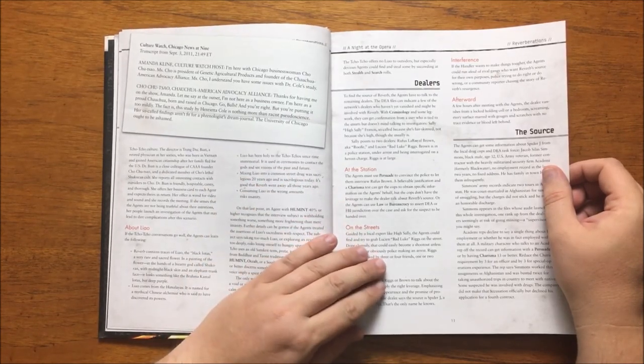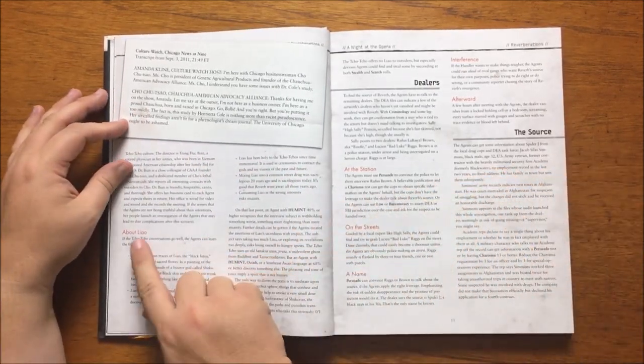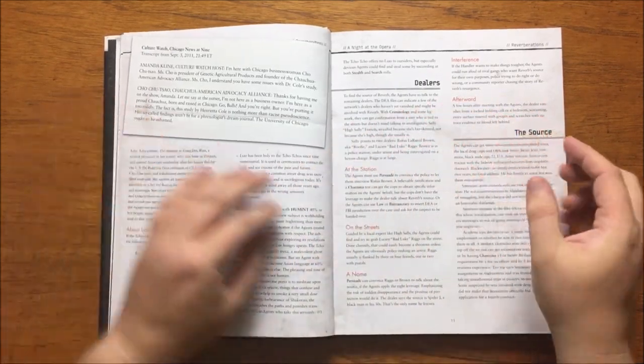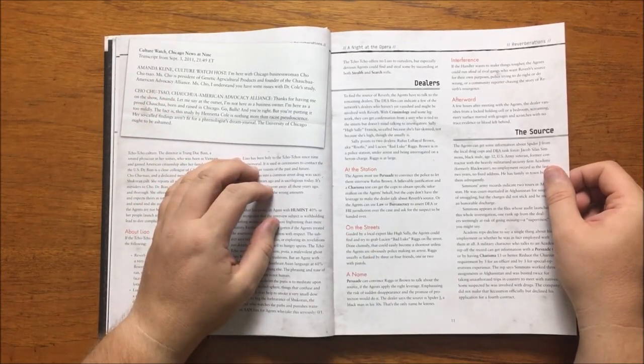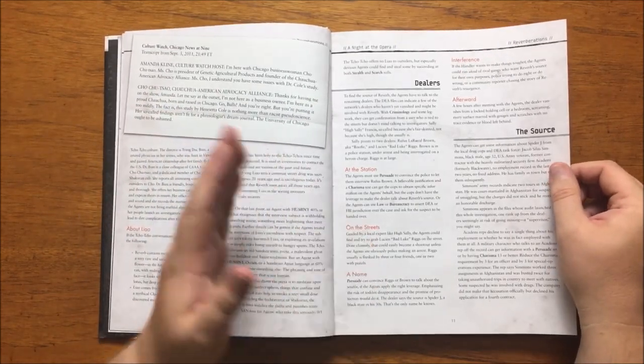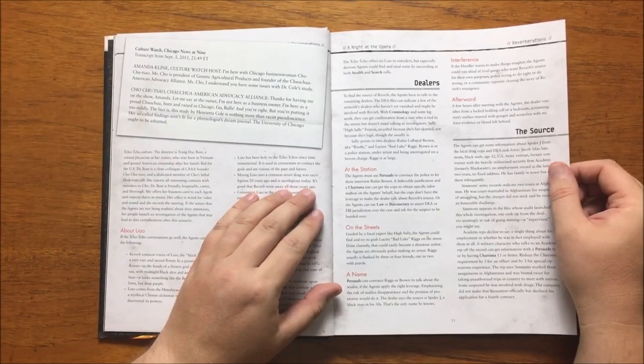If the conversations go well, they discover that Reverb contains traces of a sacred black lotus called Liao. It is said to come from the Himalayas, and has been considered holy to the Cho Cho for as long as anyone can remember. They consider it being mixed with MDMA to be sacrilegious, and that consuming the wrong amounts of it can lead to insanity.